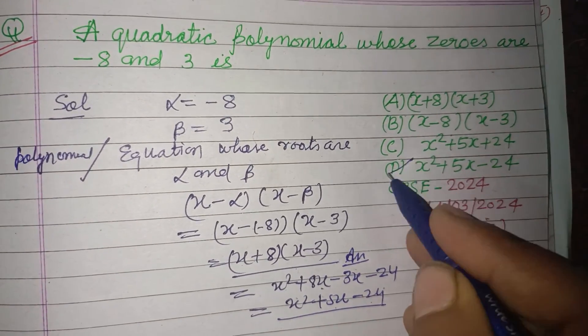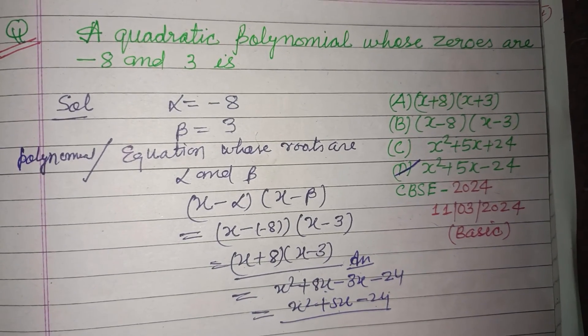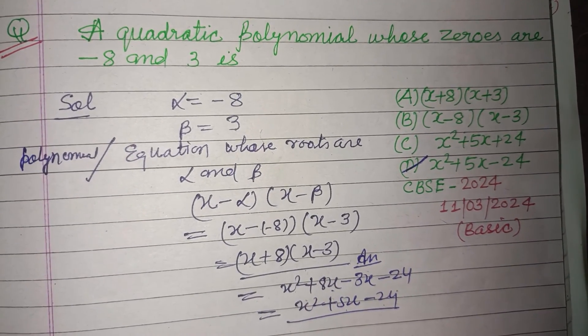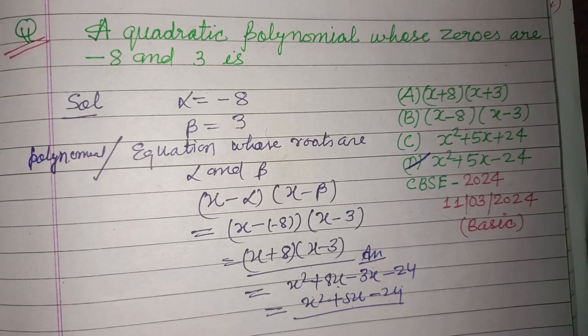This is x² + 5x - 24, which is found in option D. So option D is correct. I hope you got it. Please like the video, subscribe to the channel, and thanks for watching.